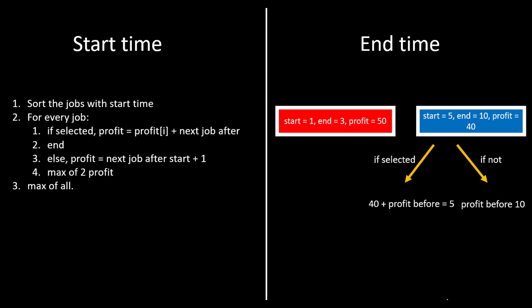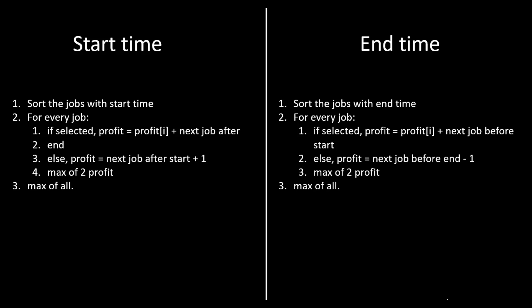In the end time case, we again have two jobs. Suppose we have already computed the result for the first job and are now on the second job. The second job is either selected or not selected. If selected, the profit becomes 40 plus the profit before or equal to 5. If not selected, the profit becomes the profit before 10, and any job ending at 9 can be used to compute the profit. In this particular video we will be solving this using end time, though you can apply the same solution for start time as well.